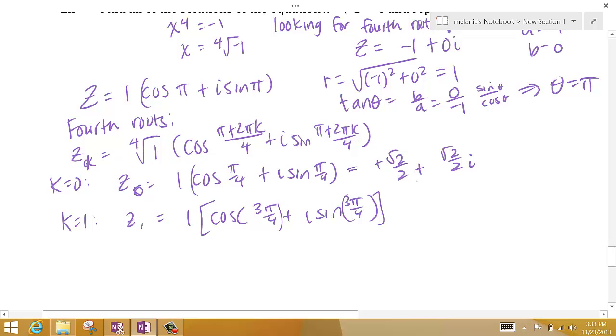So 3 pi over 4 is here in quadrant 2, so sine is positive, but the cosine will be negative. Negative root 2 over 2 plus root 2 over 2 i.